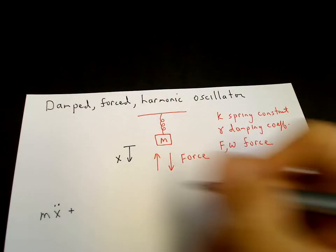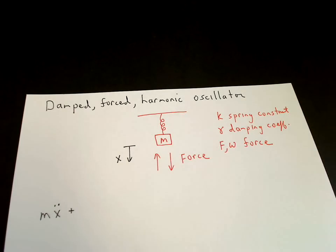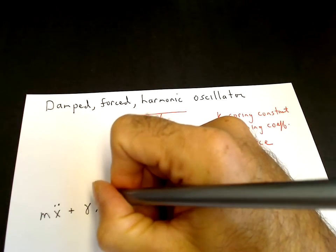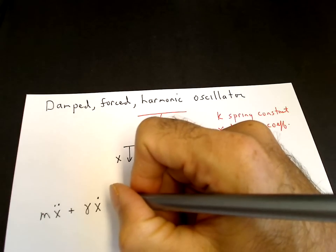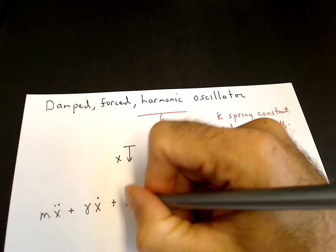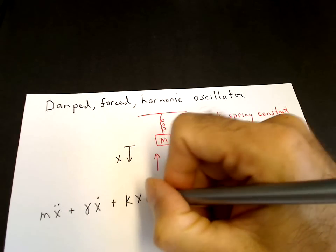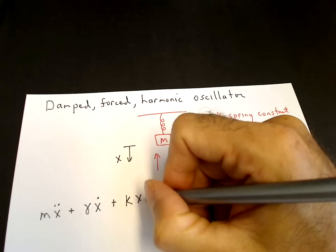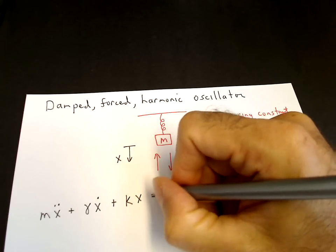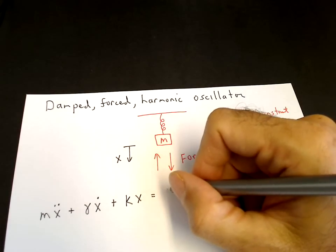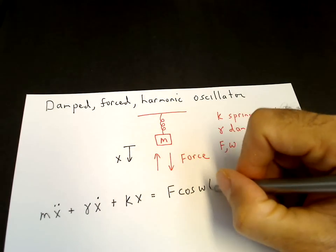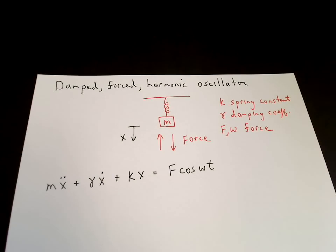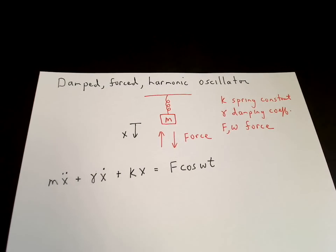Throwing all the terms that are linear in X on the left-hand side: gamma x dot is the damping force, and kx — Hooke's law — is the restoring force. This equals the inhomogeneous term, which is the external force F times cosine omega t. And that becomes the governing equation.